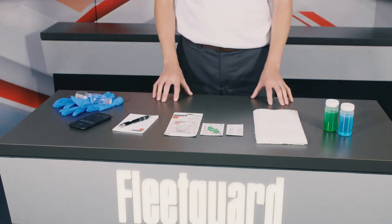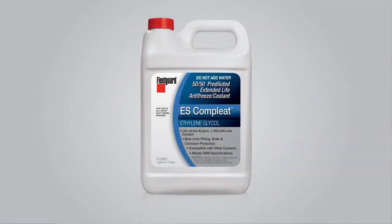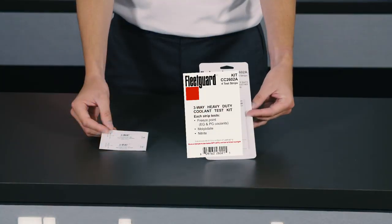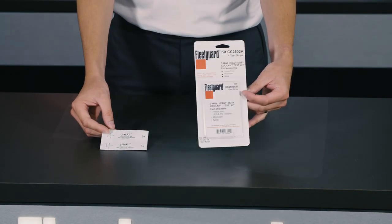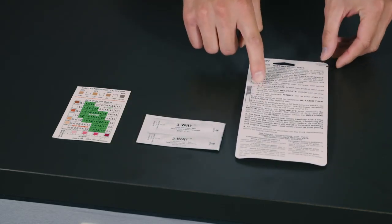For this demonstration, I will be testing a sample of FleetGuard ES Complete EG premix, or 50/50. Today we're using FleetGuard part number CC2602A, which contains individually wrapped three-way test strips along with an instruction card and interpretation chart.